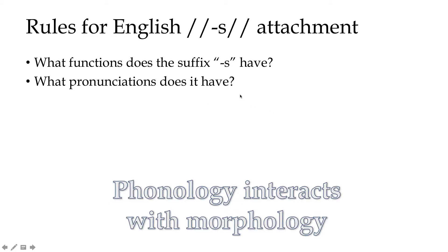What are the pronunciations? It can be pronounced as /s/, /z/, or /ɪz/ — 'walks,' 'runs,' 'wishes.' So /s/, /z/, or /ɪz/. This underlying plural suffix, this plural morpheme, can have those three different pronunciations. It turns out the phonology — the sounds — actually interacts with the morphology to change the pronunciation of this morpheme and creates different allomorphs.